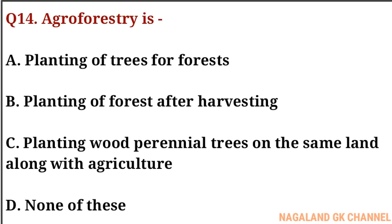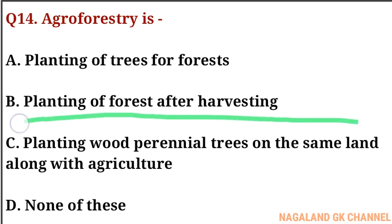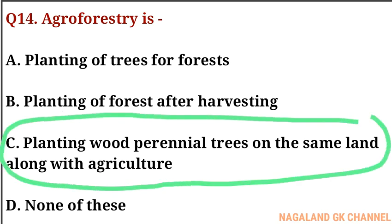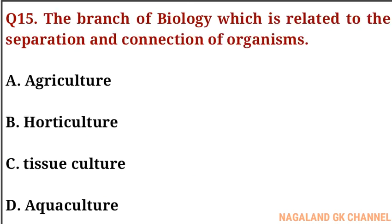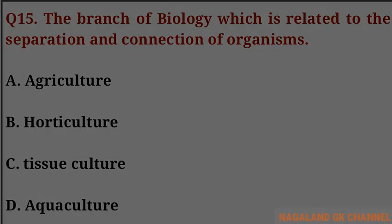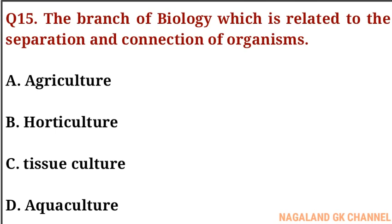Question number fourteen: agroforestry is what? The correct answer is option C, that is planting woody perennial trees along with agriculture on the same land. Question number fifteen: the branch of biology which is related to the classification and nomenclature of organisms is called what? The correct answer is option C, that is taxonomy.